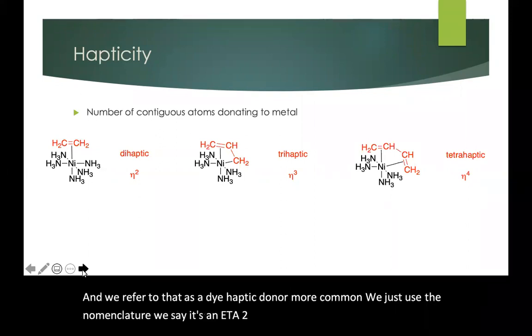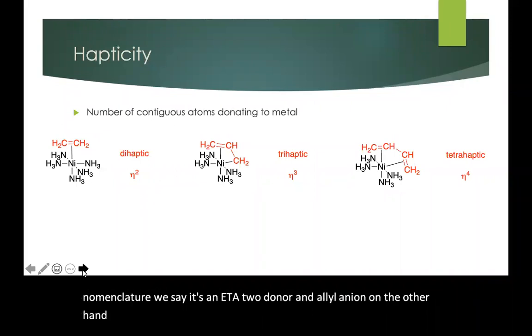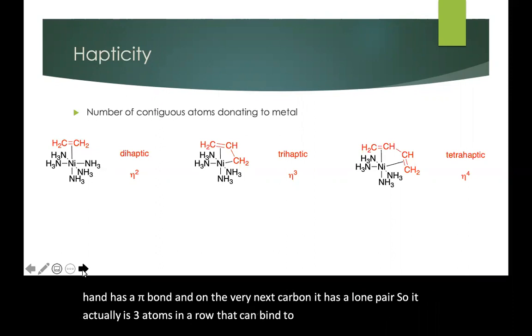An allyl anion on the other hand has a pi bond and on the very next carbon it has a lone pair. So it actually has three atoms in a row that can bind to the metal, it's trihaptic or eta 3 donor.